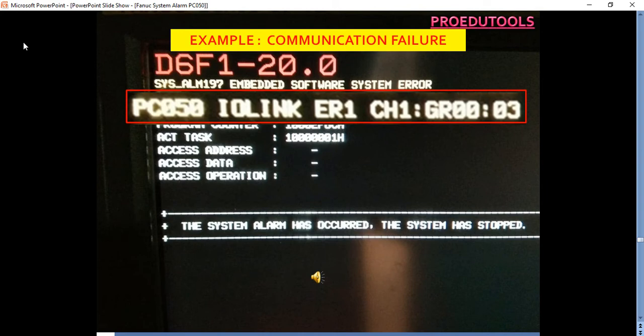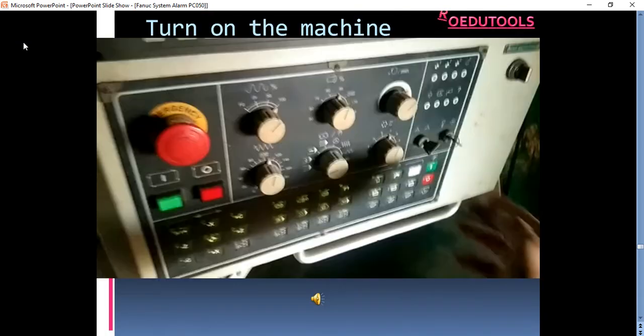The FANUC system alarm 197 embedded software system error, PC050 IO link ER1CH1 colon G dot R 003. Shut off the machine. Just ignore these alarms as they are the result of the PC050 alarm system.